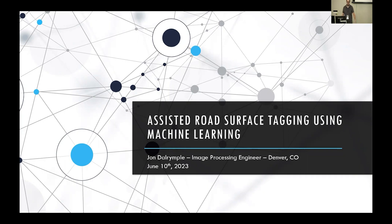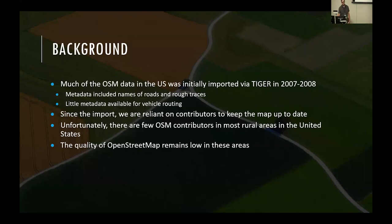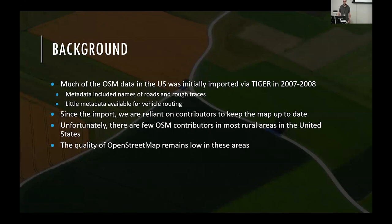This won't be a technical presentation. This is more of a success story about how I was able to build this model with incredible accuracy for road surface tagging. Some of the background story starts really like 15 or 16 years ago. A lot of the OSM road network data in the United States came from the TIGER dataset, a federally provided dataset that included very little metadata — just the road name and rough traces of where the roads are.